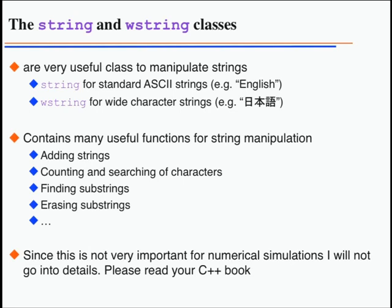The first class we've already seen is the string class. There's a string class and a wide character string class, the wstring class. The string class can store any 8-bit character — English words, for example. The wide character string is for Unicode characters: Chinese text, Arabic text, Japanese text. The string class has many members — you can resize, count, find, replace, and erase substrings. Look at the reference documentation for the string class. I will not discuss this further and it will not be part of the exam.